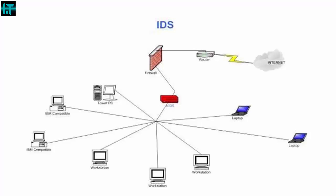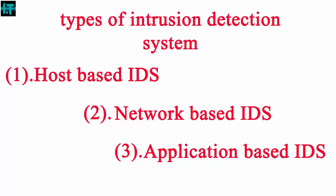The functions of an intrusion detection system are: first, monitoring and analyzing both user and system activities; second, analyzing system configuration and vulnerabilities; third, assessing system and file integrity; fourth, ability to recognize patterns typical of attacks; fifth, analyzing abnormal activity patterns; sixth, tracking user policy violations.